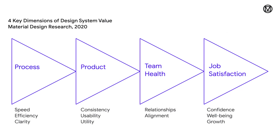The four key elements of a successful design system consist of the process — which defines the how to improve speed and efficiency; the product — which identifies and defines the what to keep things consistent; team health — which is important in keeping the team aligned; and lastly, job satisfaction — which builds confidence and continues to grow.